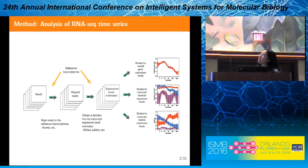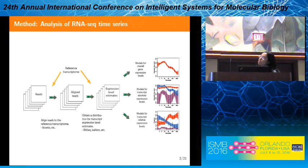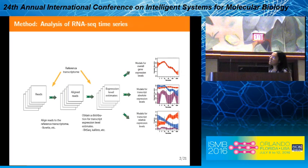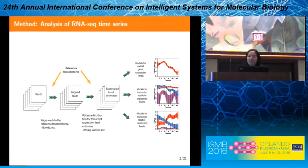After having transcript expression level estimates, we had three settings for modeling time series. First, overall gene expression levels. Second, transcript absolute expression levels — these transcripts are all transcribed from the same gene and expression levels are given in RPKM. Third, transcript relative expression levels — this is the relative abundance of transcripts originating from the same gene, given as values between zero and one representing the ratio of each transcript among all transcripts from the same gene.